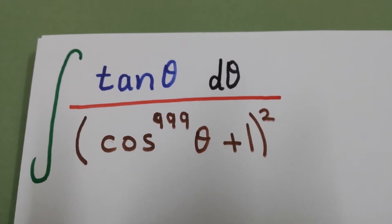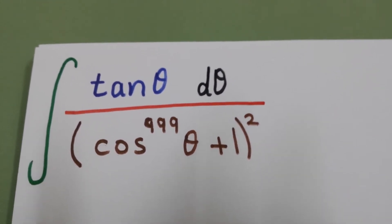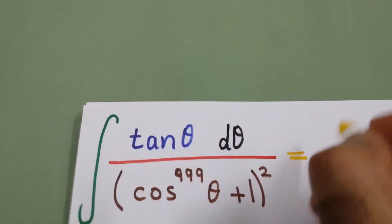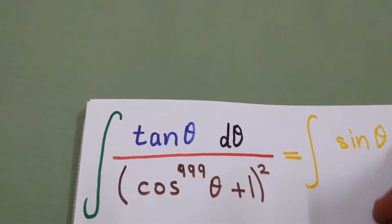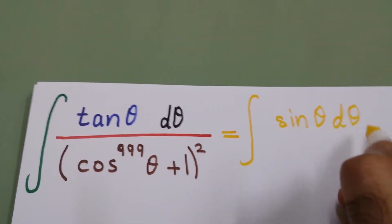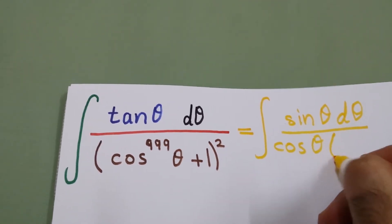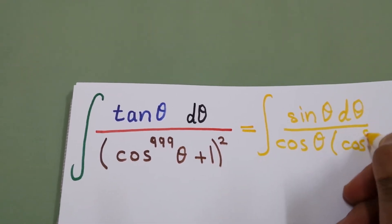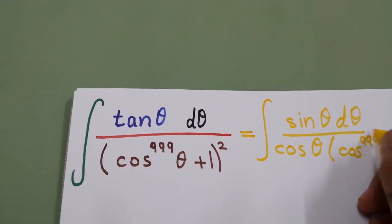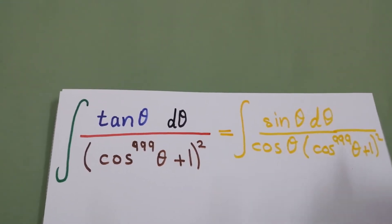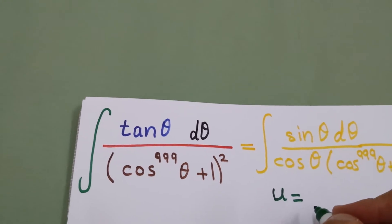To evaluate this integral, we will write tangent theta as sine over cosine. So the integral will be sine theta d theta over cosine theta times cosine to the power 999 theta plus one, all squared.